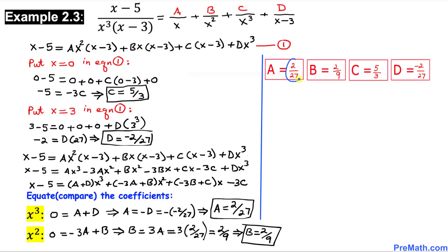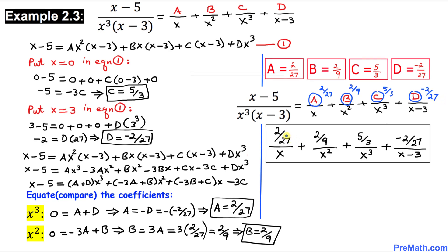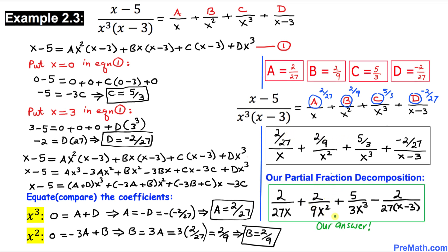So our values are: A equals 2 over 27, B equals 2 over 9, C equals 5 over 3, and D equals negative 2 over 27. Substituting these into the partial fraction decomposition gives us our final answer. Thanks for watching, and please don't forget to subscribe to my channel for more exciting videos.